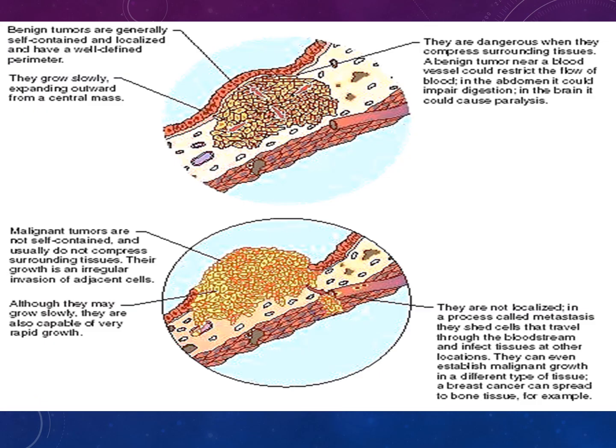A diagram shows the difference between benign and malignant tumours. Benign tumours are generally well self-contained and localised — they don't invade. Malignant tumours are not self-contained, can metastasise, and although some may grow slowly, they can also grow quite rapidly.